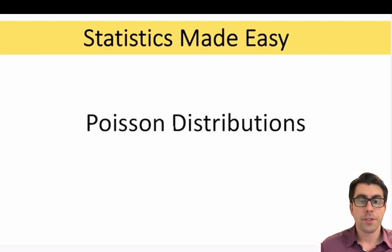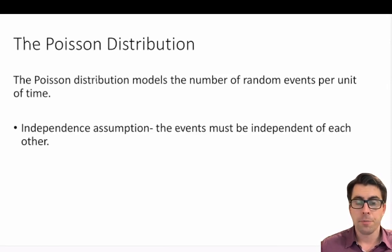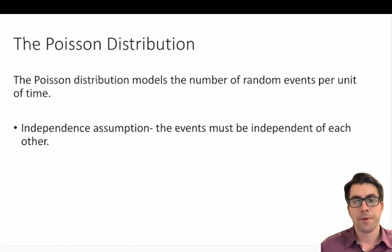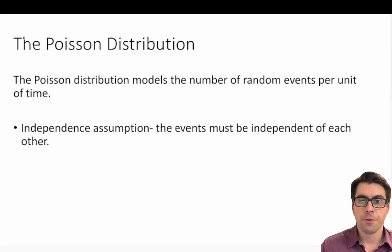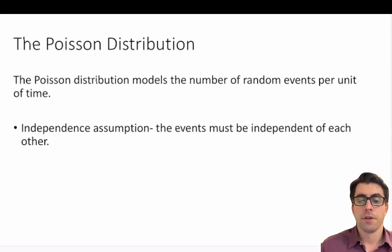In this video we're going to discuss Poisson probability distributions — how and when to use them — as well as work through a few practice problems. The Poisson distribution is used to model the number of random events per unit of time, such as the number of bees to a flower in five minutes, cars to a drive-through in half an hour, patients to the emergency room in one hour, or website visits Amazon receives on Black Friday.